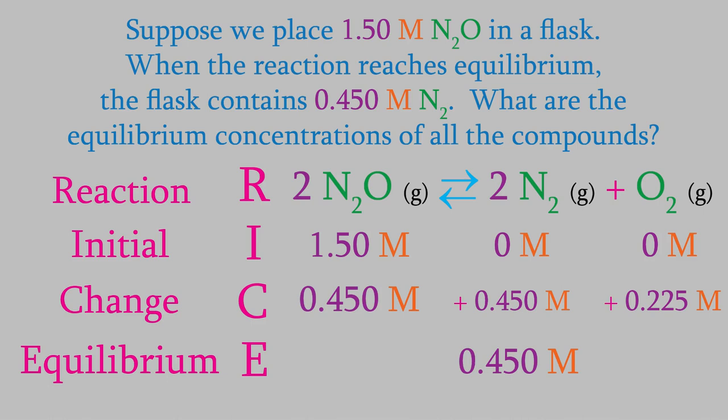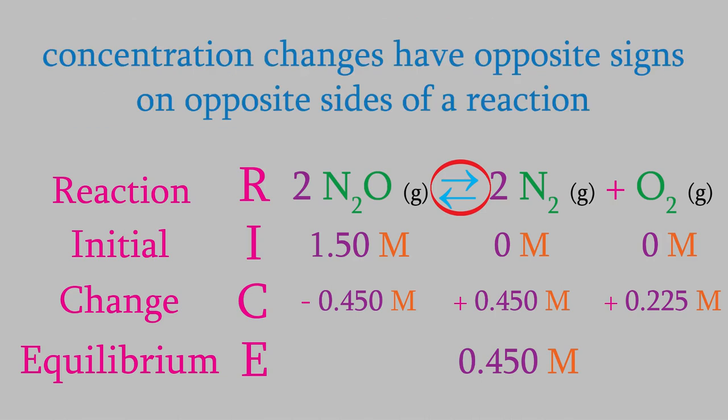But there's one difference. The N2O is on the opposite side of the reaction from the N2. So, since the N2 concentration went up by 0.450 molar, the dinitrogen monoxide will go down by that amount. That's an important thing to remember. The concentration changes on opposite sides of the reaction will have opposite signs. One side will go up, and the other side will always go down.